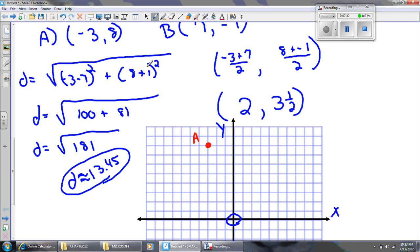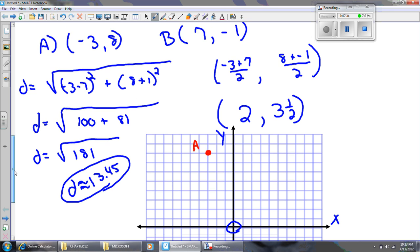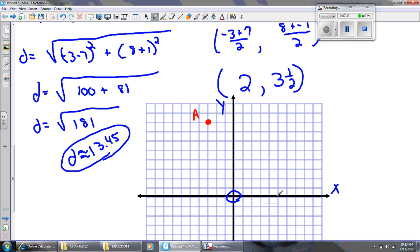Point B's coordinates are at 7, negative 1. So that's B. I'll draw in that segment.